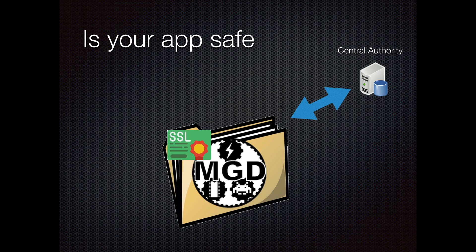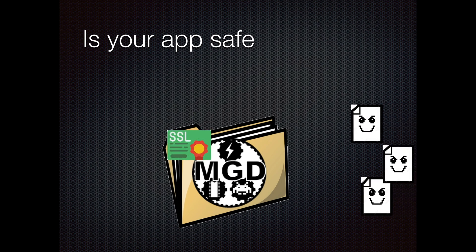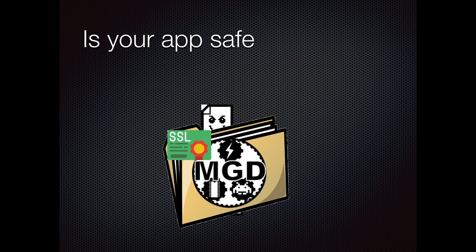Now let's say someone gets at my application file on a server and starts putting in bad files and bad code — taking my good application and making changes to it to do bad things. Well, when I put a certificate on my folder, it encodes and encrypts it and keeps track of the size, the date, and the checksum to make sure everything adds up the same. If someone makes a modification to it, then that certificate won't work. It'll say this is not the same file that was certified, and the user will get an alert and the application won't run. This makes sure that the application is safe for you to run no matter what, even if someone else has touched it.